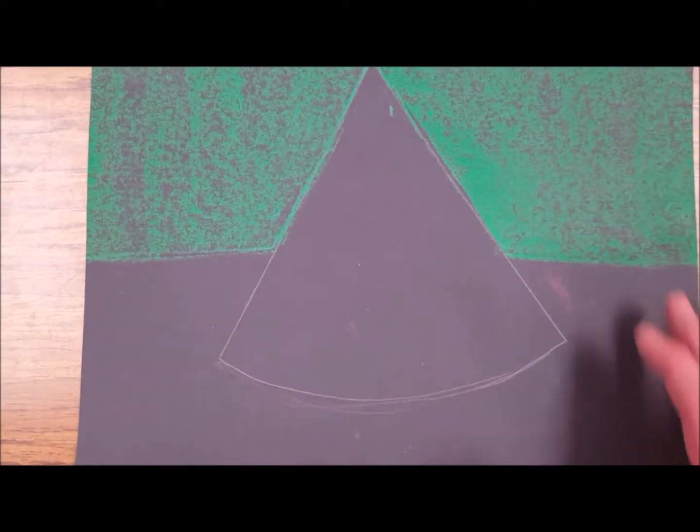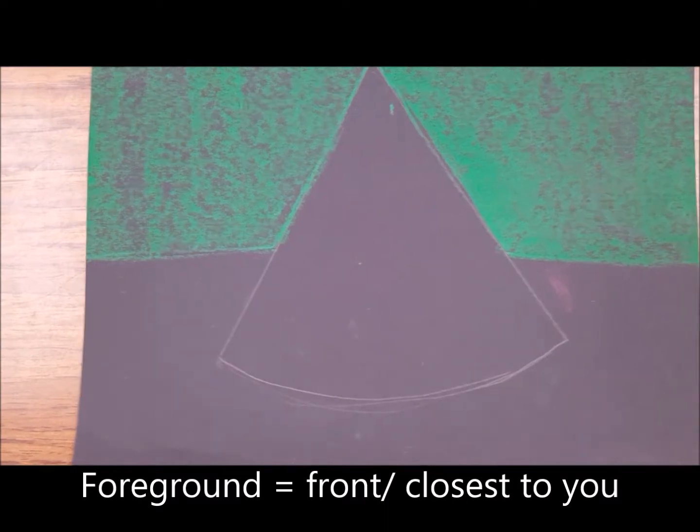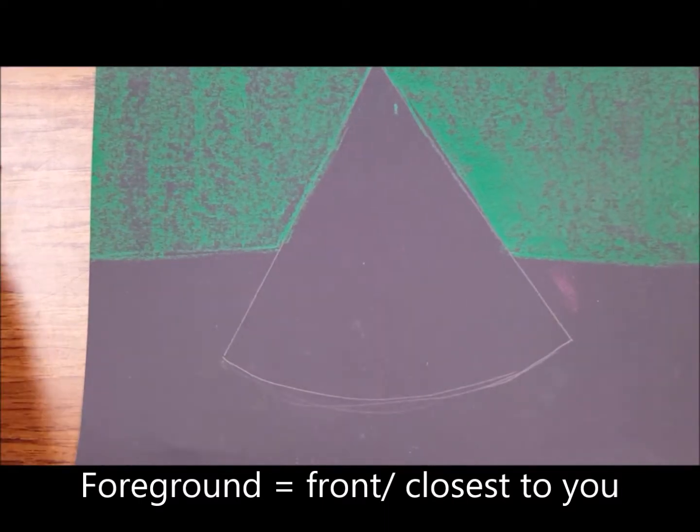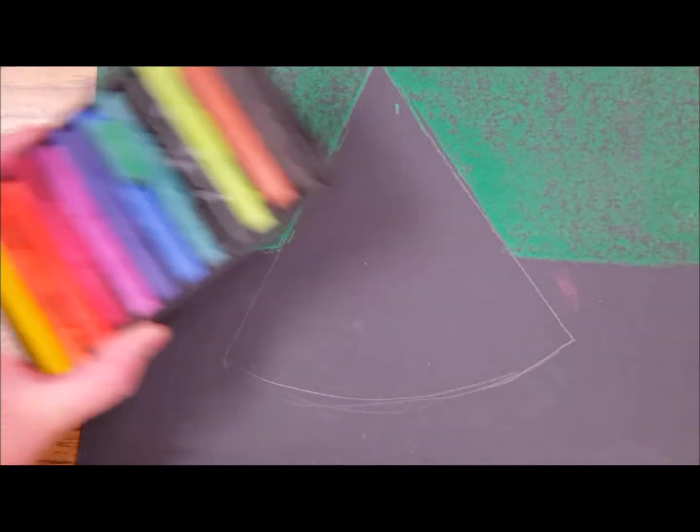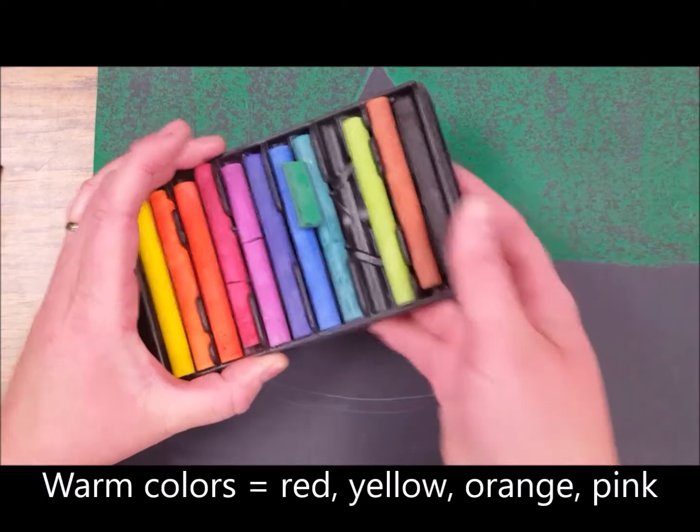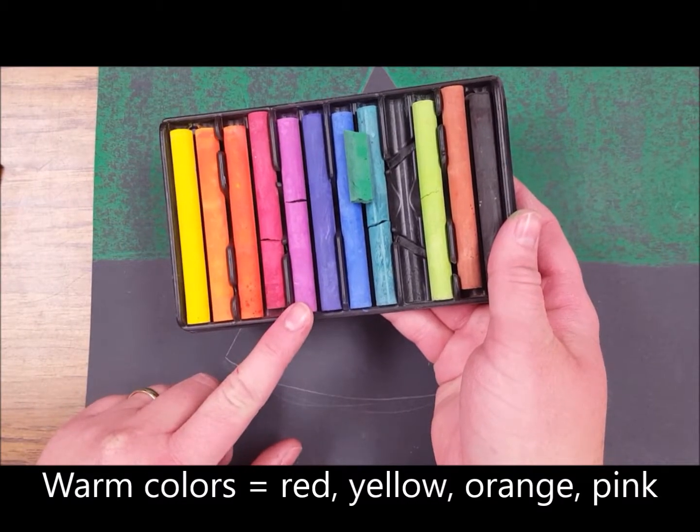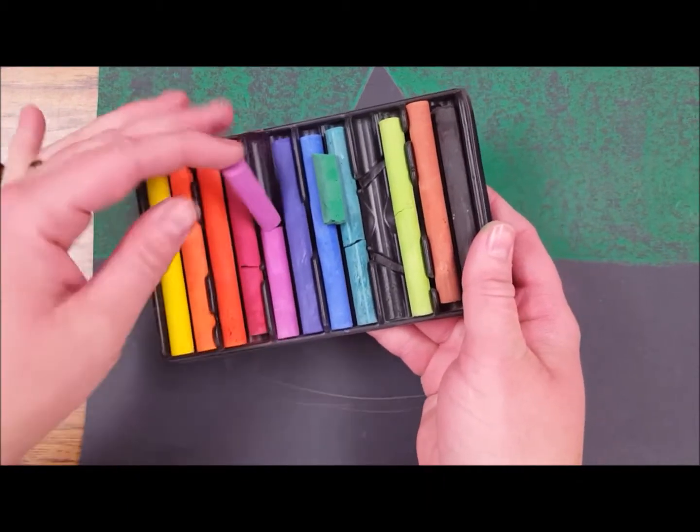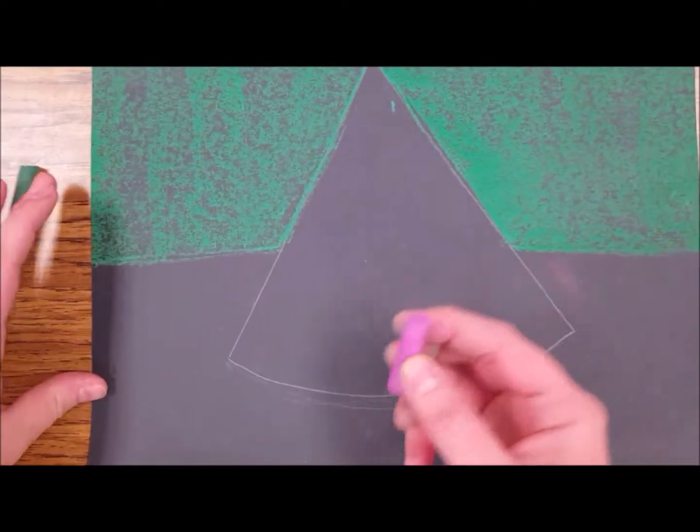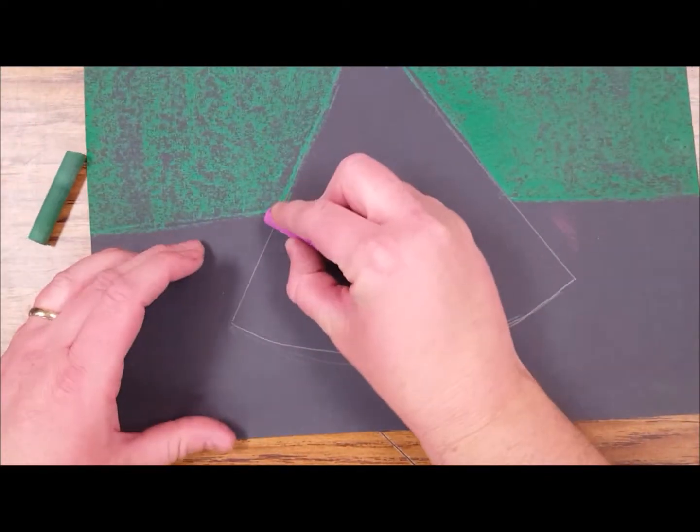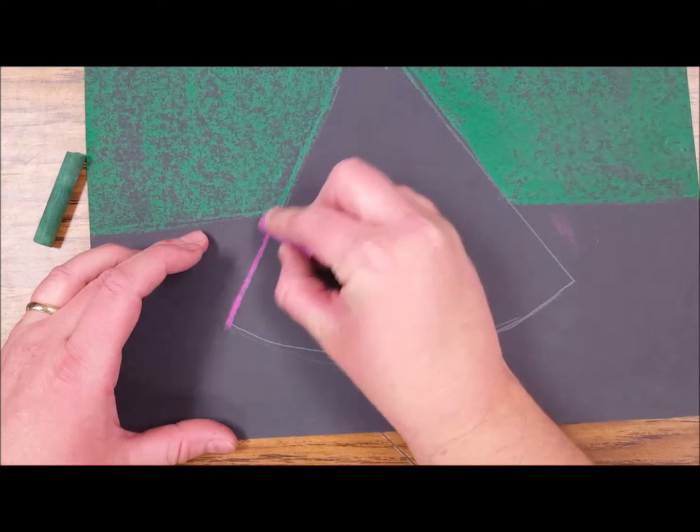Now after you've colored in your background, you need to choose a color for the foreground table that the shape is actually sitting on. So I'm going to go with a warm color, which would be yellow, orange, red, or I tend to group pink in with the warm colors because pink is made from red and white. So I'm going to go ahead and outline my shape.